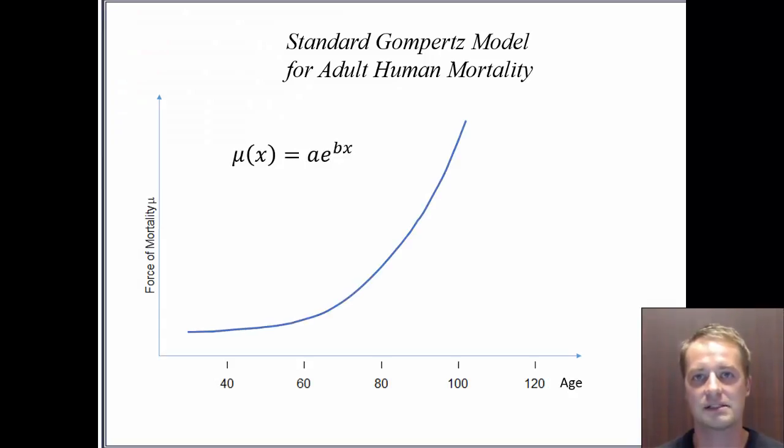The blue line here represents the force of mortality for adult humans over time, modeled with the standard Gompertz model. The real situation, however, looks more like the red line. The mortality curve levels off at the right end.